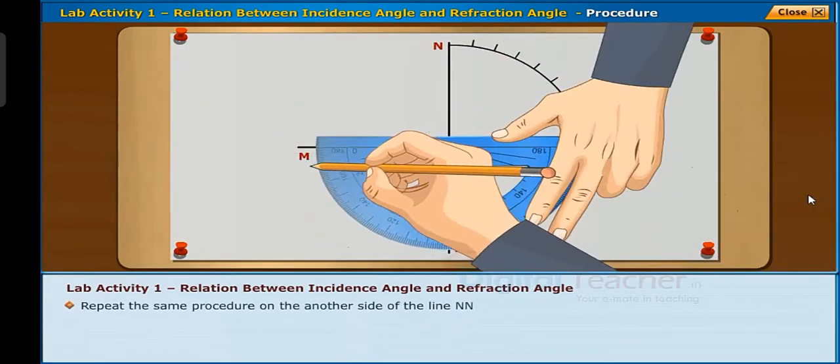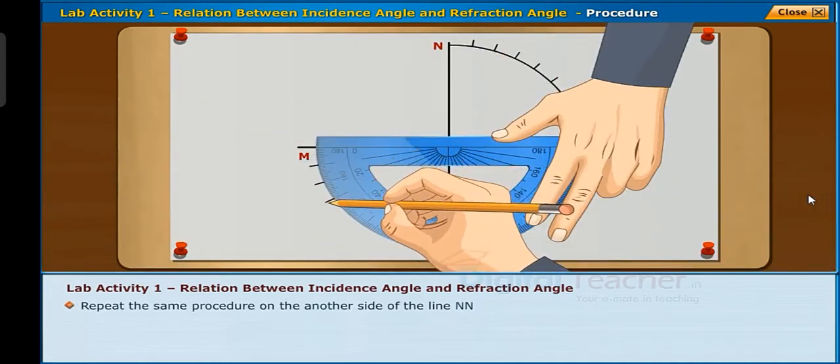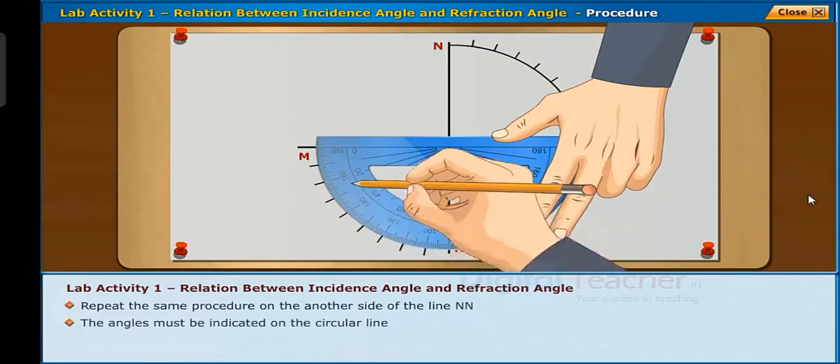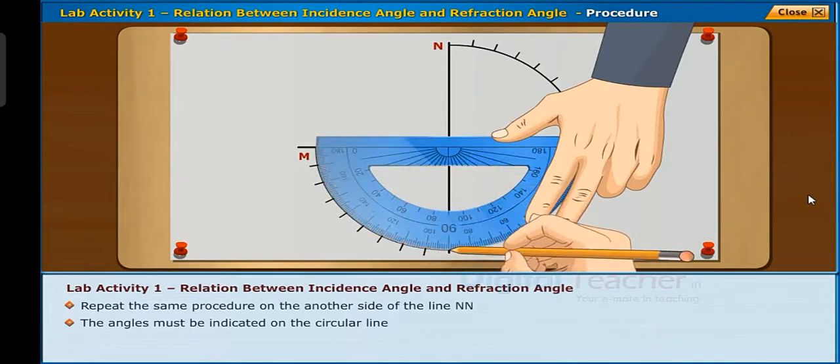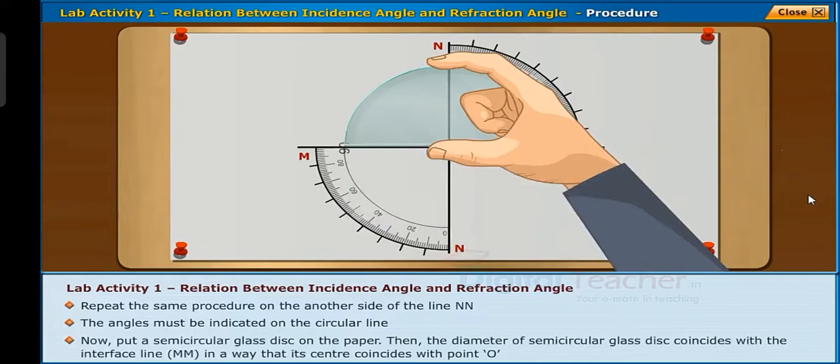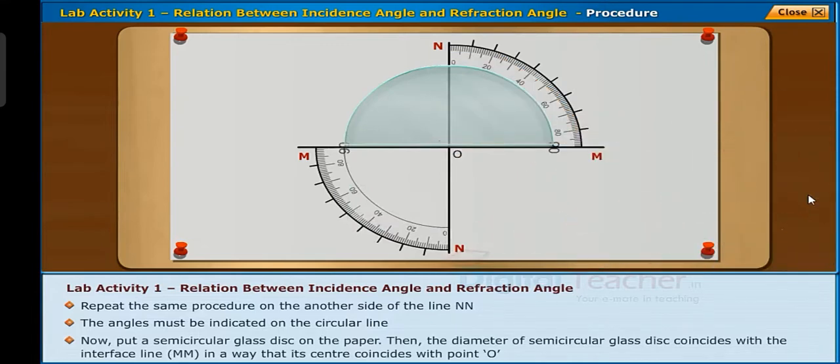Repeat the same procedure on the other side of the line NN. The angles must be indicated on the circular line. Now put a semicircular glass disc on the paper so that the diameter of semicircular glass disc coincides with the interface line MM in a way that its center coincides with point O.